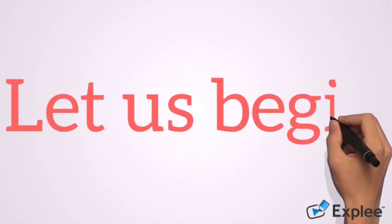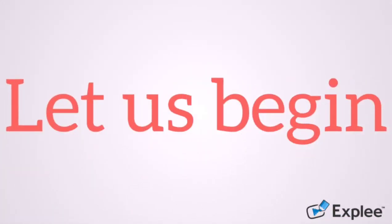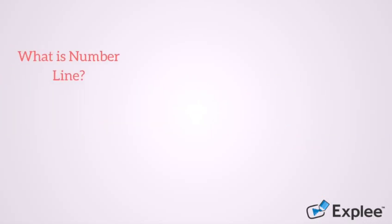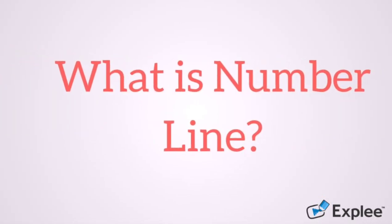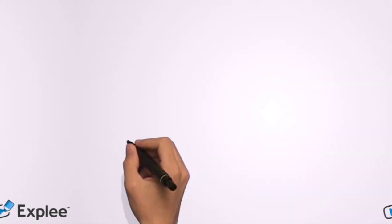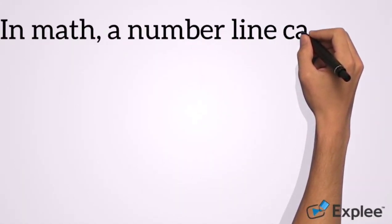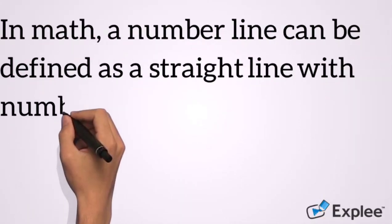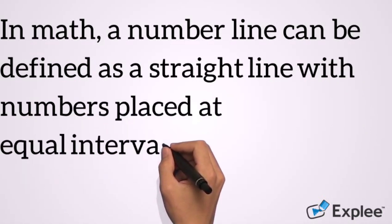Let us begin. In math, a number line can be defined as a straight line with numbers placed at equal intervals or segments along its length.